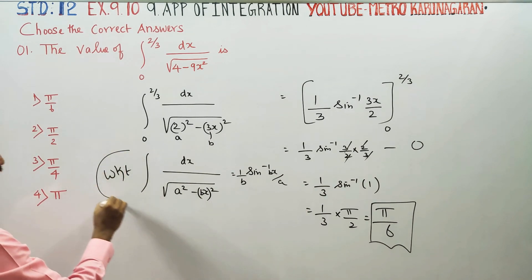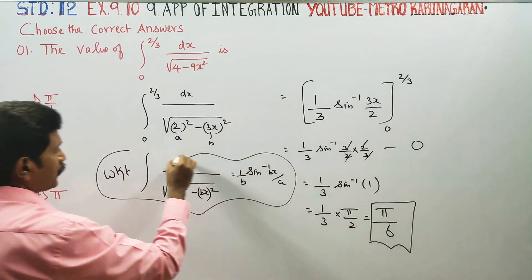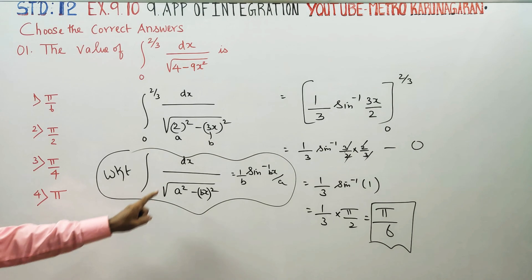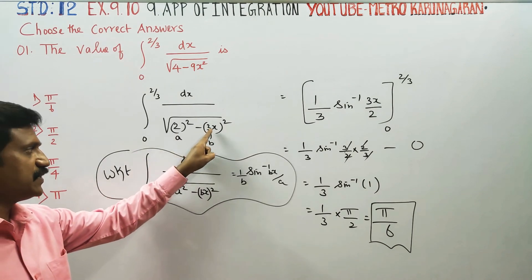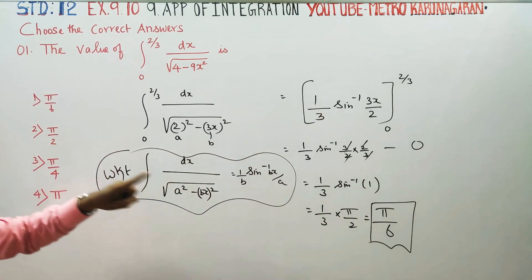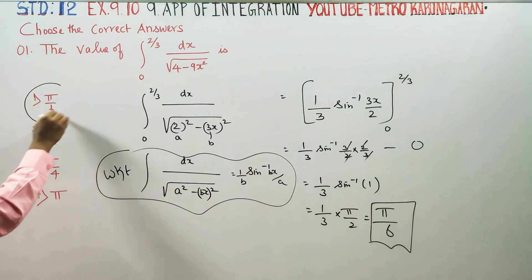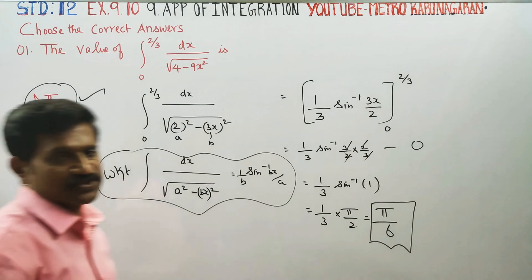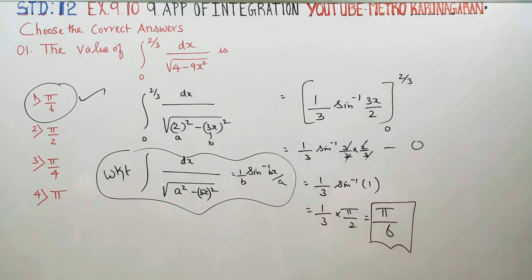In the formula, we get integration dx by √(a² - bx²) is equal to 1 by b sin inverse of bx by a. The formula is used to get the answer. Therefore, your option 1 will be the best option for this question.